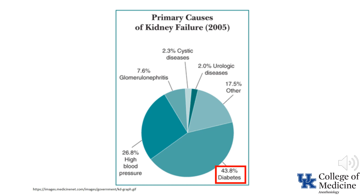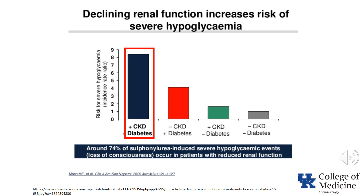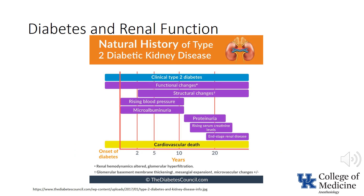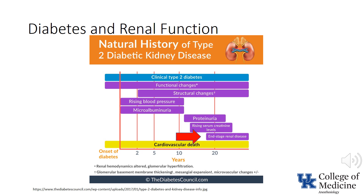Diabetes accounts for over 40% of patients with renal failure. One thing to keep in mind is that the risk of severe hypoglycemia increases with decreasing renal function. This slide shows the natural history of renal disease in the presence of type 2 diabetes. In most patients, microalbuminuria is present at the time of diagnosis. Even with reasonable management, frank proteinuria and increasing serum creatinine levels are evident about 12 years after diagnosis. End-stage renal disease begins to appear about 15 years after diagnosis.